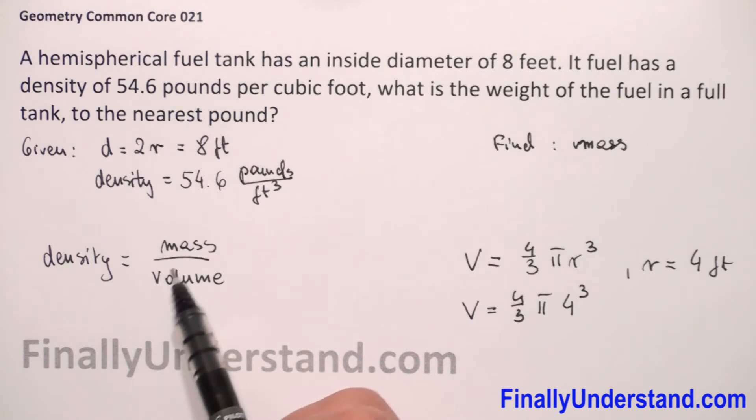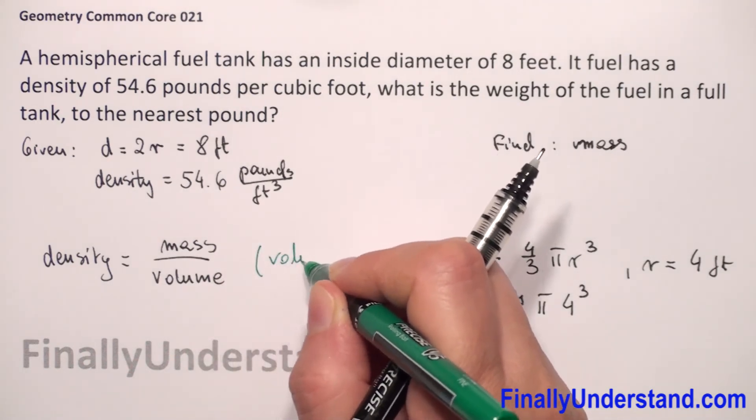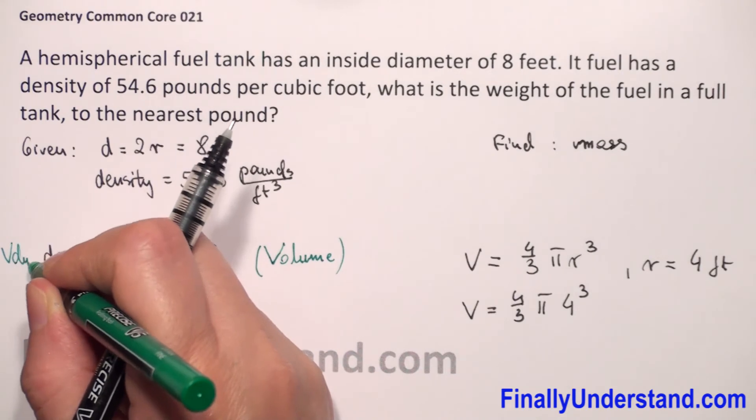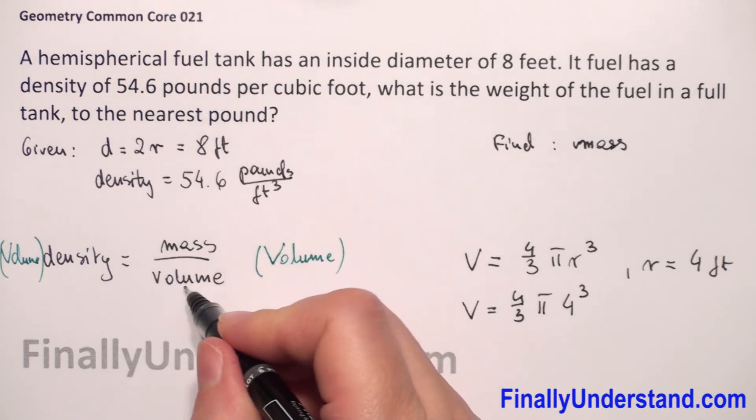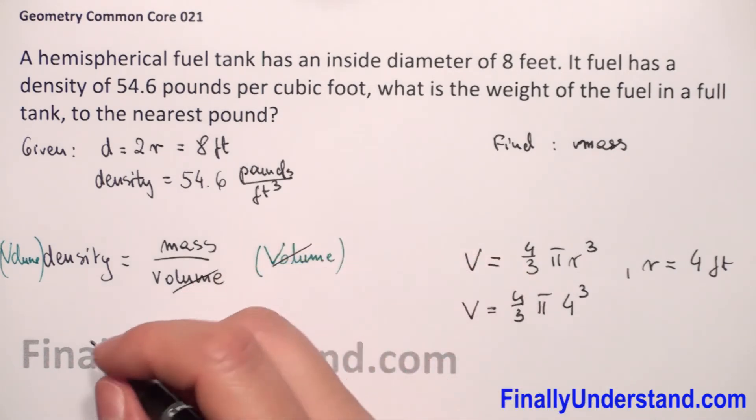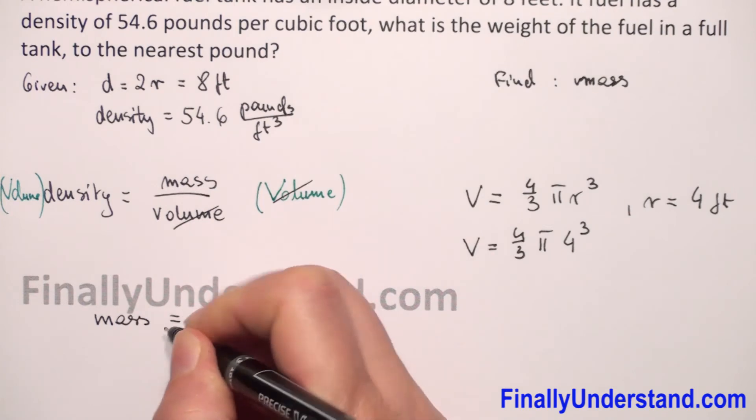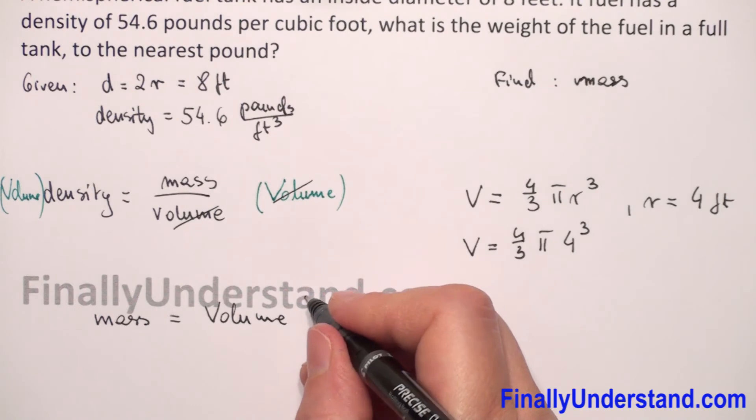From this formula we can calculate the mass. We'll multiply both sides by volume to clear the denominator. So we can cancel volume, and we have that mass equals volume times density.